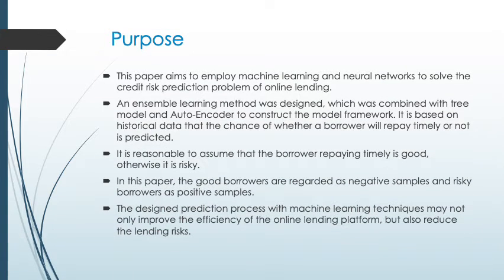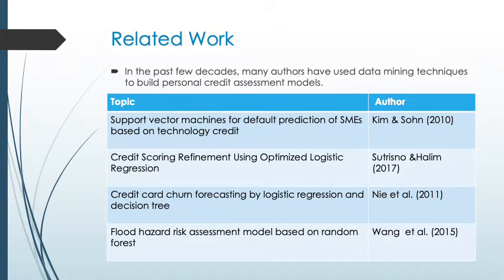The purpose is to employ machine learning and neural networks to solve the credit risk prediction problem of online lending. An ensemble learning method was designed, combined with a tree model and autoencoder to construct the model framework. Based on historical data, the chance of whether a borrower will repay timely or not is predicted. Good borrowers are regarded as negative samples and risky borrowers as positive samples. This prediction process may not only improve the efficiency of the online lending platform but also reduce lending risk.